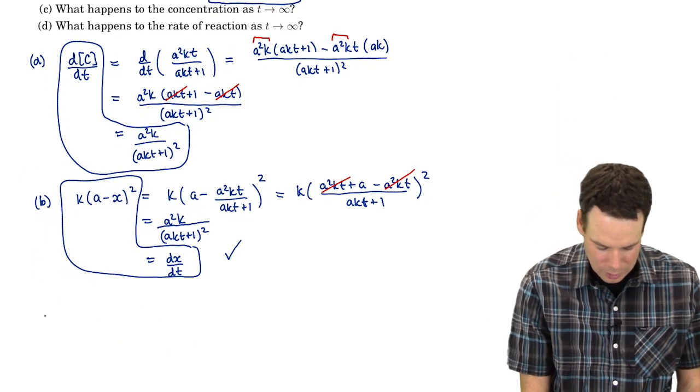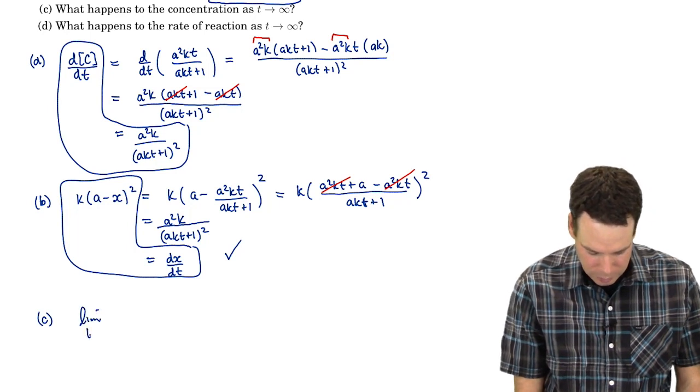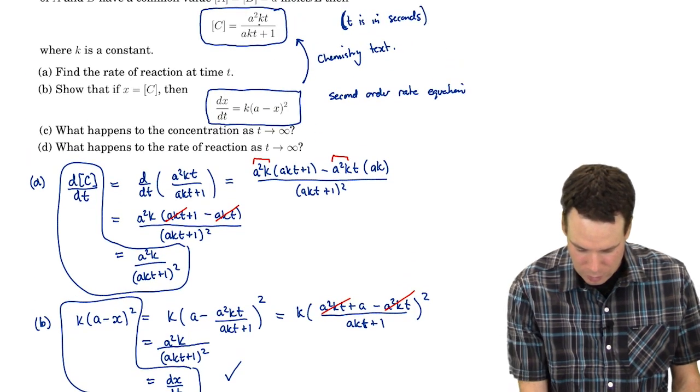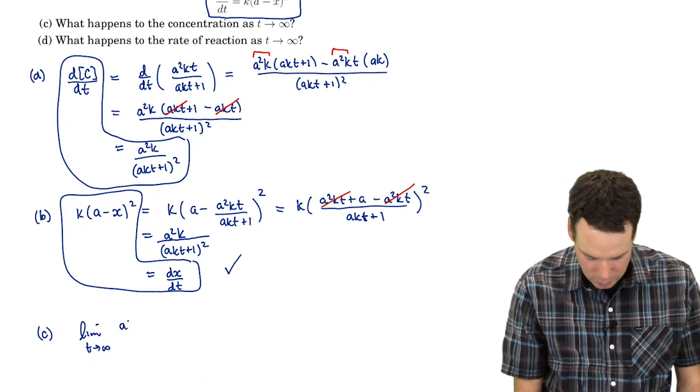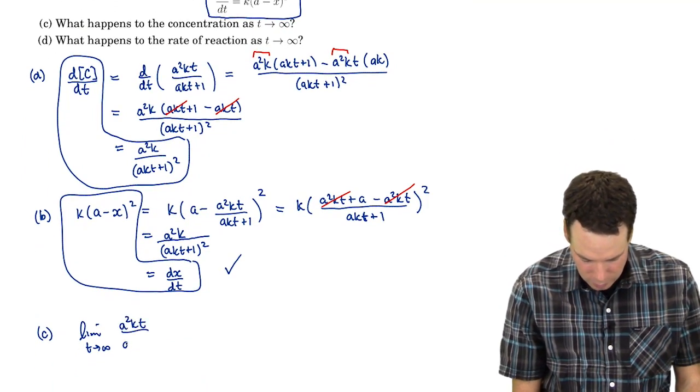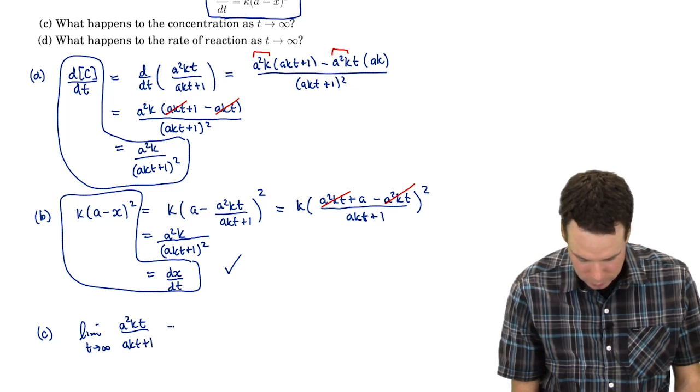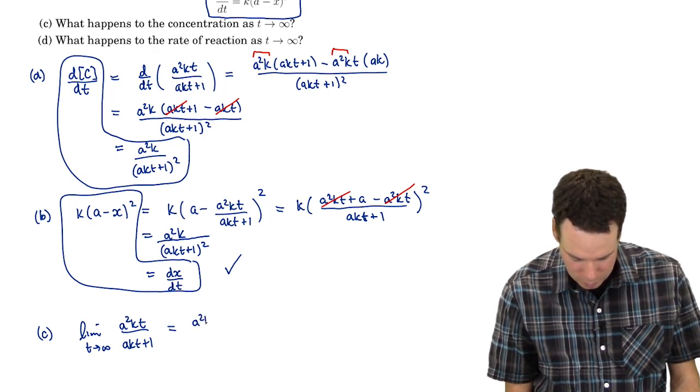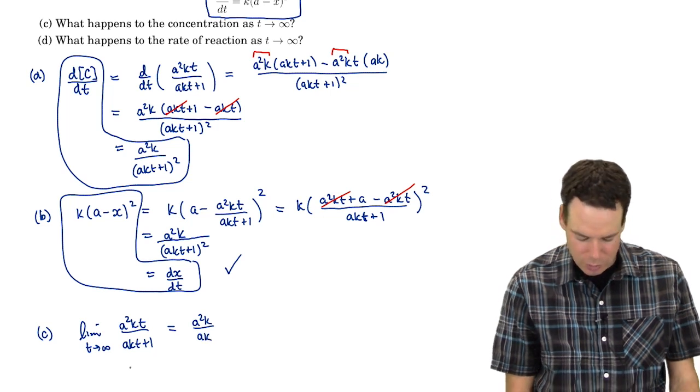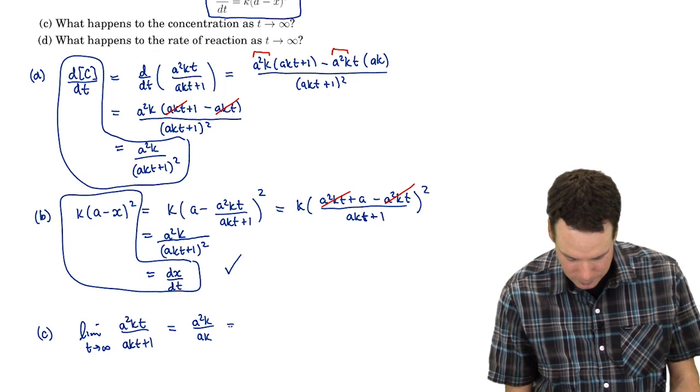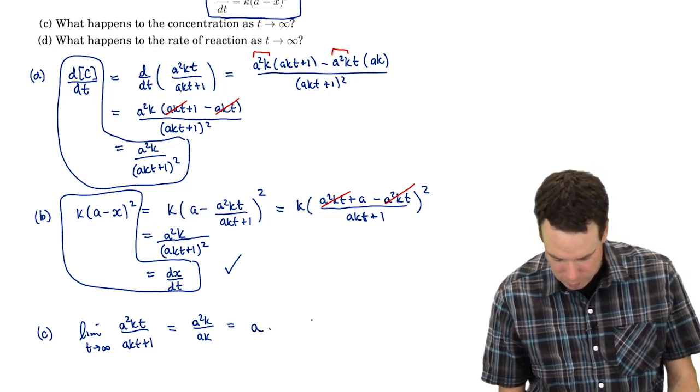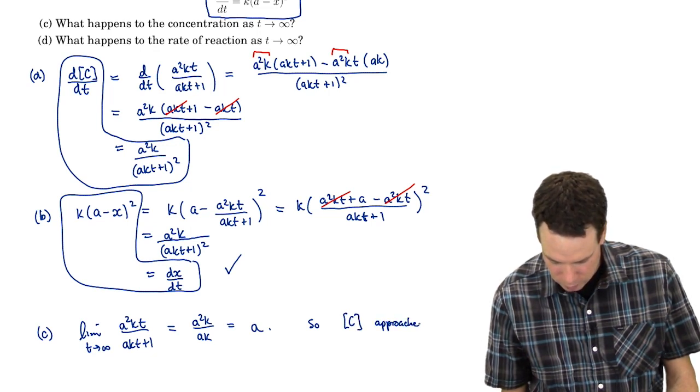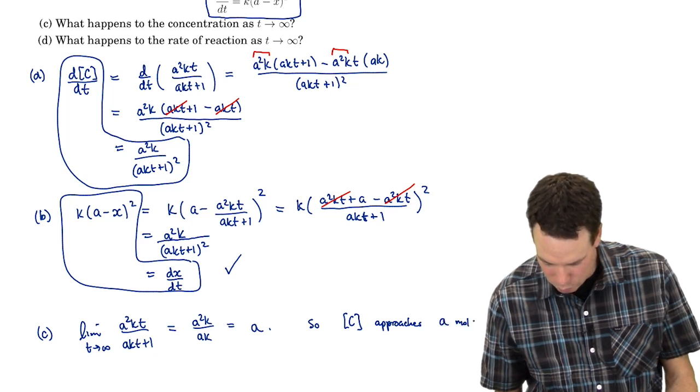Now what happens to the concentration as t goes to infinity? Well, that's asking for what is the limit as t goes to infinity of this function here. a squared kt over akt plus 1. And when we take the limit of this, notice it's a linear function over a linear function. So the ratio becomes, well, to compute the limit we look at the ratio of the leading coefficients as t goes to infinity. And so that has a value of a. So what this means is the concentration of C approaches a moles per liter.